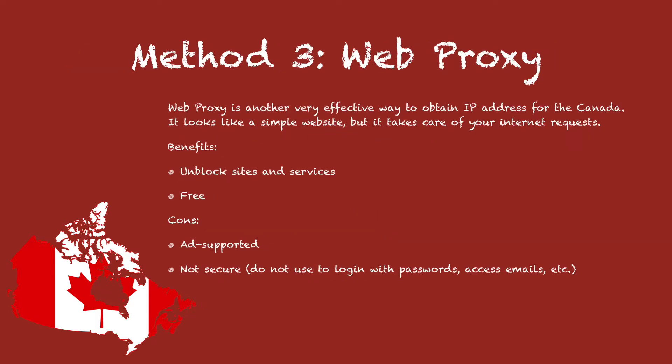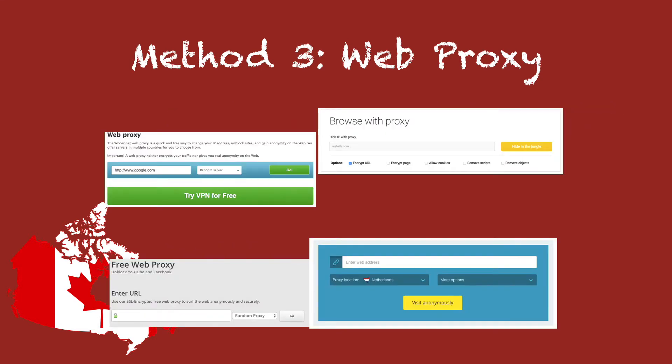Method 3: Web proxy is another very effective way to change your IP address. It is a free tool that you can use to unblock sites and services. Here you can see a few examples of web proxies.